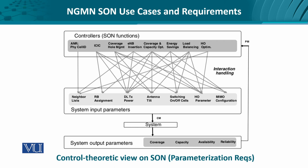Seppo Hemelenin took it from an IEEE paper, where the SON functions are known more as controller functions. These controller functions provide input to the system as input parameters like neighbor density, the assignment of RB channels, downlink transmit power, antenna directions, polarization, switching capability of cells, their current status — how many cells have outages or are using certain bandwidth frequencies — then handoff parameters and configuration for MIMO.